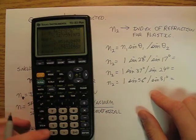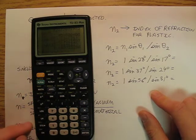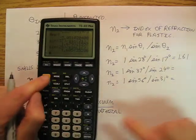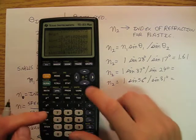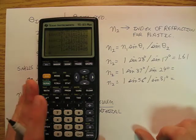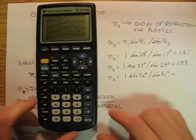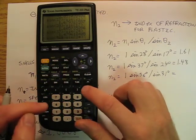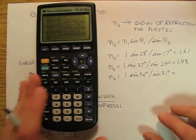So I'm going to go sine 28 divided by sine 17, and I'm going to get 1.61. I'm going to change the 28 to 37 and the 17 to 24, and I'm going to get 1.48. I'm going to do it one more time: sine of 56 divided by sine of 31, and I'm going to get 1.61.